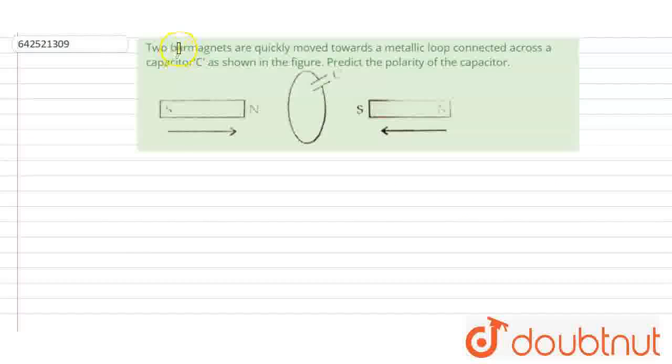Hello everyone, let's start the question. The question is: two bar magnets are quickly moved towards a metallic loop connected across a capacitor C, as shown in the figure. Predict the polarity of the capacitor.